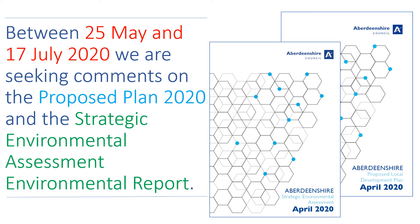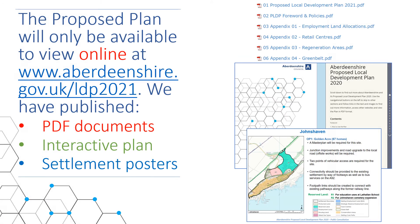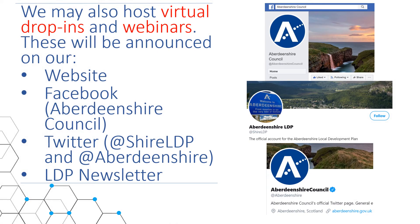Between 25 May and 17 July 2020, we are seeking comments on the proposed Local Development Plan. In addition, we are also seeking comments on the Strategic Environmental Assessment Environmental Report. In light of ongoing restrictions associated with COVID-19, you can only view the proposed plan online at www.aberdeenshire.gov.uk/LDP2021. We have created separate PDF documents of the proposed policies and appendices, an interactive plan if you wish to learn more about a specific place, and posters for every settlement with an allocation or other designation. We may also host virtual drop-ins and provide opportunities for question and answer sessions delivered via an online webinar format.